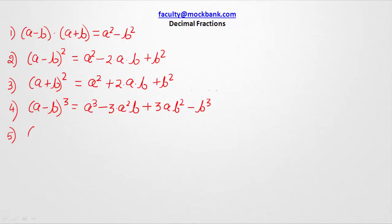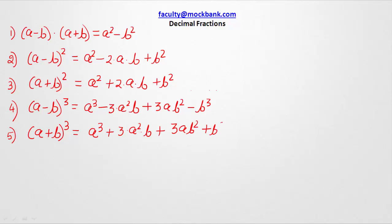The fifth rule that we must understand is (a + b) whole cube, which equals a³ + 3a²b + 3ab² + b³.